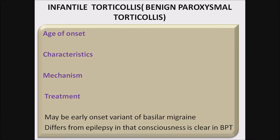Infantile torticollis — benign paroxysmal torticollis. Age of onset is around 3 to 8 months of age and it usually disappears by age 2 years. Characteristics: head inclination seen associated with nausea, vomiting, pallor, and agitation, lasting hours to days. Mechanism: head inclination is seen towards the slow phase of nystagmus in infants. Treatment: usually no treatment — only reassurance. It may be an early-onset variant of basilar migraine. It differs from epilepsy in that consciousness is clear in benign paroxysmal torticollis.